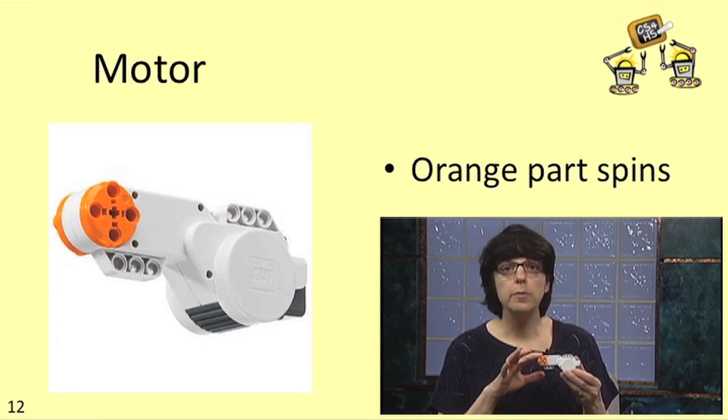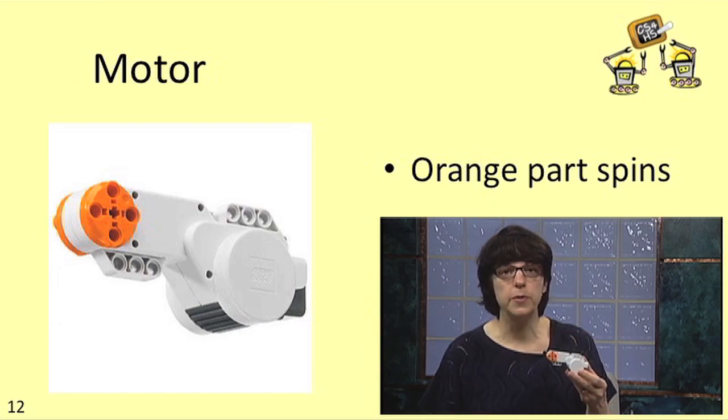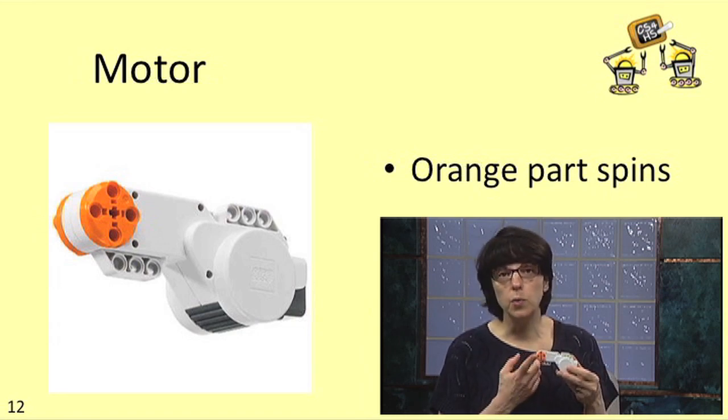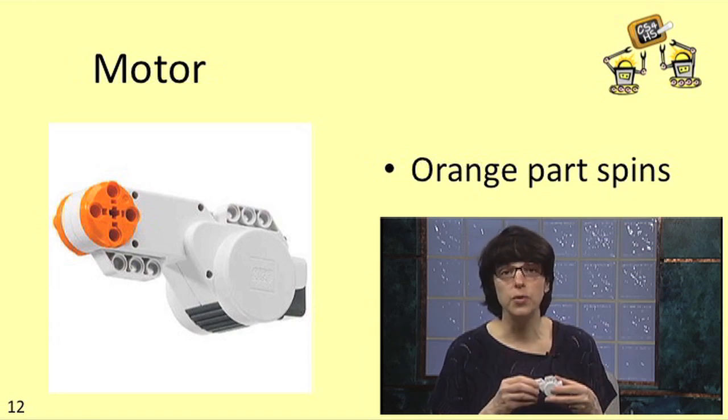This orange part of the motor can spin around forwards and backwards. When you write a program to control the motors, you can specify both the direction and the speed of their rotation. If you connect this orange part to a wheel and the robot tells the motor to move, then presto your wheel moves.